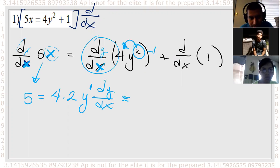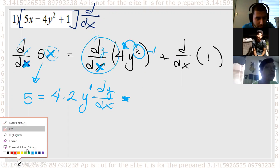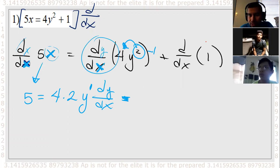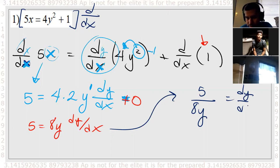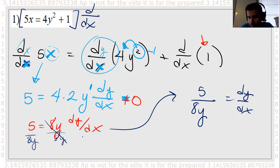Last but not least, derivative of a constant is just 0, so plus 0. Our answer looks like it's going to be 5 equals 8y dy/dx. The last thing we're going to do is solve for dy/dx. To leave this by itself, it's the same thing as saying 5 over 8y equals dy/dx. That's my solution because all I had to do is divide by 8y.